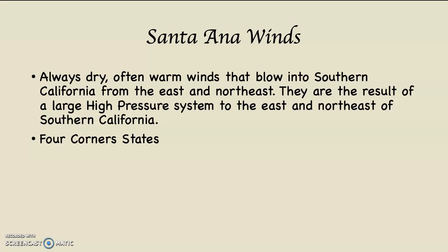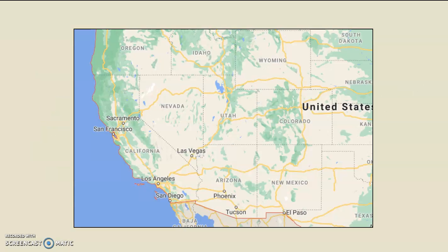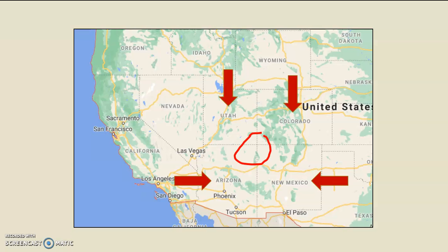The four corner states are Arizona, New Mexico, Utah, and Colorado. Those states are to the east and northeast of Southern California. That is the area where the high-pressure system needs to be established in order to create Santa Ana winds. I circled the four corner states on the map — so called because they come together at right angles.